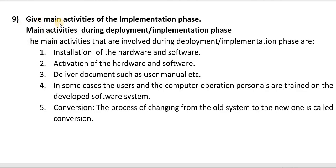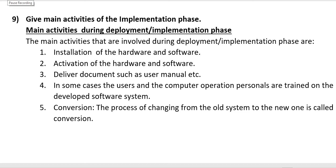Question nine: Give the main activities of the implementation phase. The main activities during the deployment or implementation phase are: 1. Installation of the hardware and software. 2. Activation of the hardware and software. 3. Deliver documents such as user manuals. 4. In some cases, users and computer operations personnel are trained on the developed software system. 5. Conversion — the process of changing from the old system to the new system is called conversion.